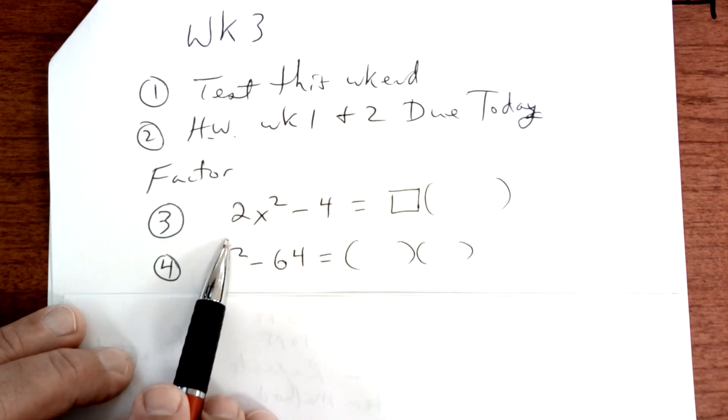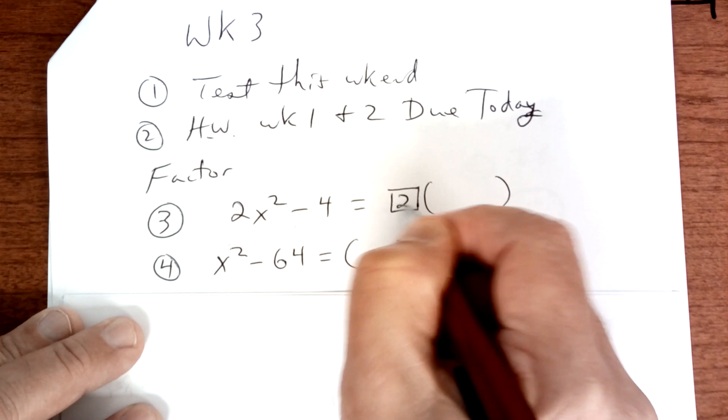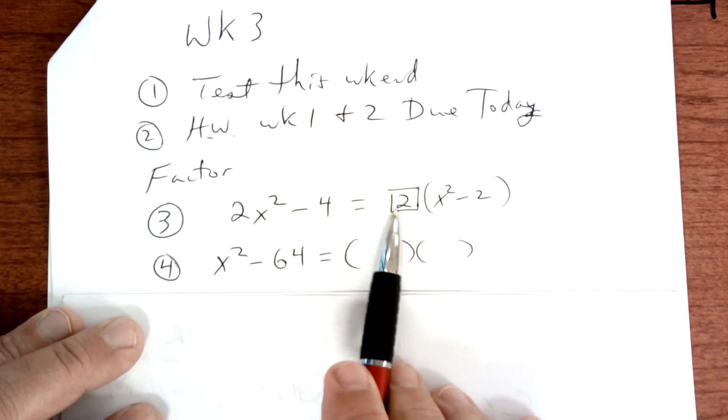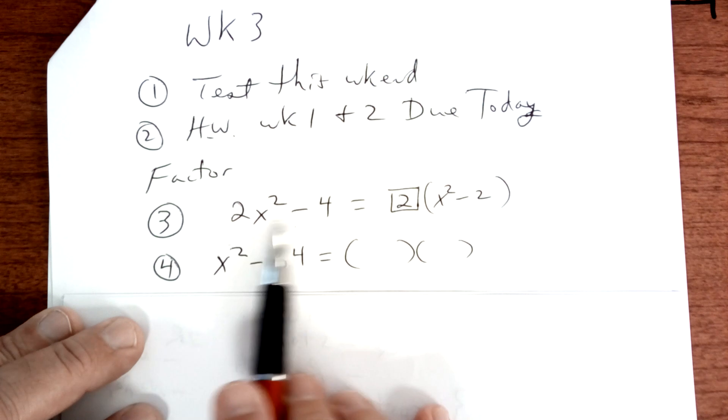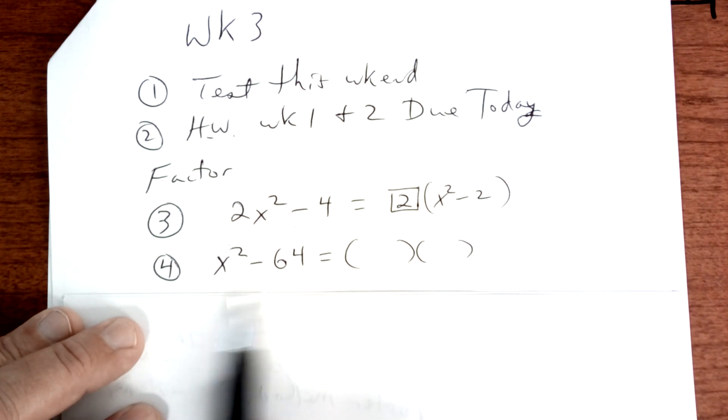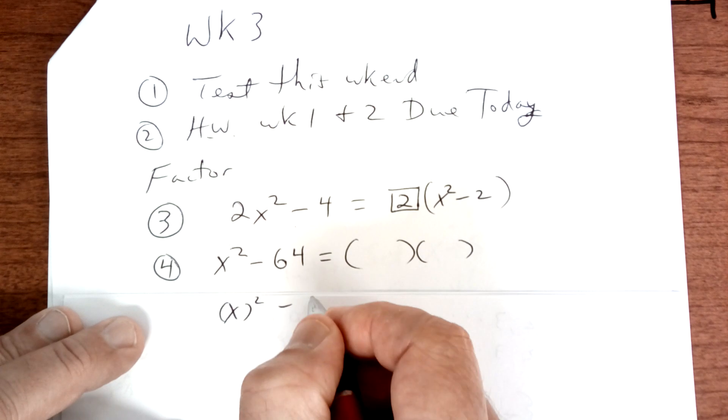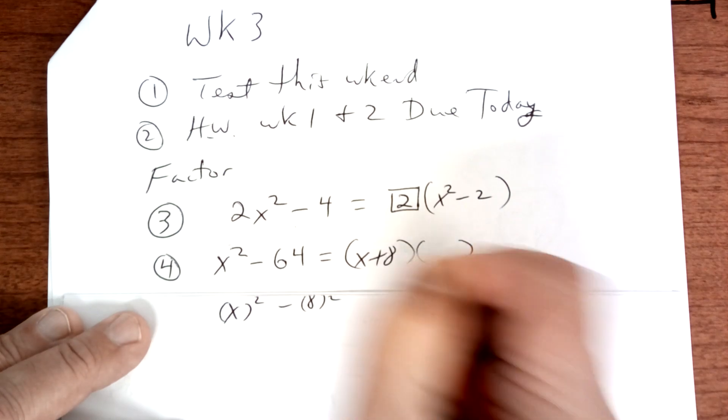Remember, you learned what's in common. So you're going to take a 2 out of here and you're left with x squared minus 2. 2 times this is that. 2 times 2 is that. This one right here is the difference of two squares. It's x squared minus 8 squared, 8 times 8. So it's going to be x plus 8 and x minus 8.